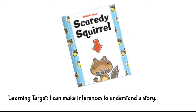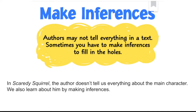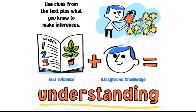Today you're going to be reading or listening to a story called Scaredy Squirrel. It's in your My Book. Your learning target while you read the story is: I can make inferences to understand a story. Making inferences is basically like figuring something out using clues and using what you already know about the world. In the story Scaredy Squirrel, the author doesn't tell us everything about the main character in the words — you also need to learn about him by making inferences. Inferences help you fill in the gaps about a character or about a story. You're going to be using clues from the text plus what you already know, and there might be evidence in the pictures too. When you put that evidence together with what you already know, you will understand the story better.